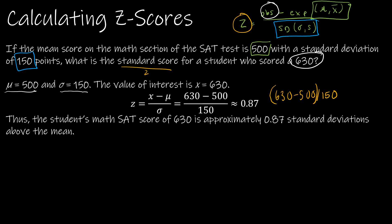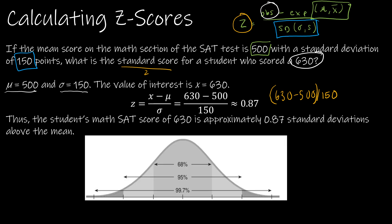The result tells us that the student's math SAT score of 630 is approximately 0.87 standard deviations above the mean. Let's visualize this. Using the empirical rule, the mean is in the middle at 500. Adding the standard deviation of 150 gives us 650, then 800, then 950. Subtracting gives us 350 and 250. This student scored 630, which falls between the mean and one standard deviation above.